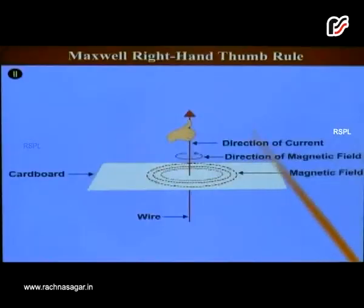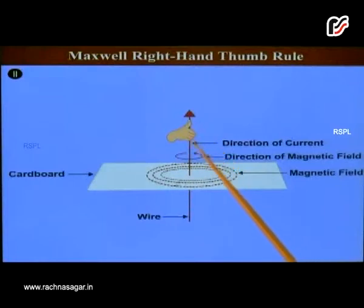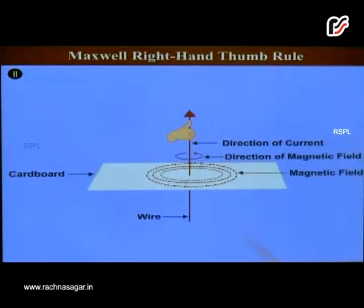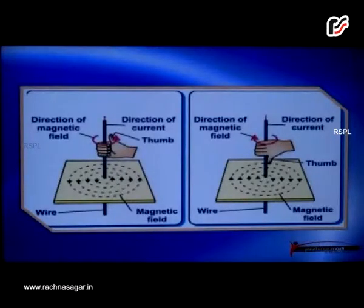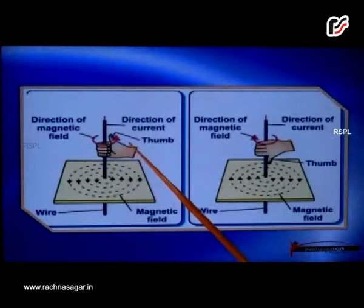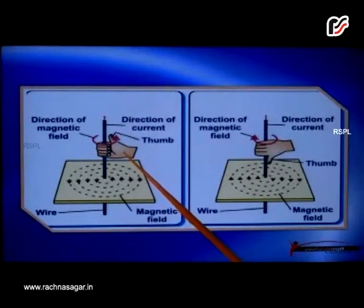Maxwell's right hand thumb rule can be used to describe the direction of the electromagnetic field. With this rule, when the thumb of the right hand is pointing the direction of the current, then the fingers will be pointing the direction of the magnetic field. With the help of Maxwell's right hand thumb rule, if we apply it to these situations, we can see that the thumb gives us the direction of the current and the fingers give the direction of the magnetic field.